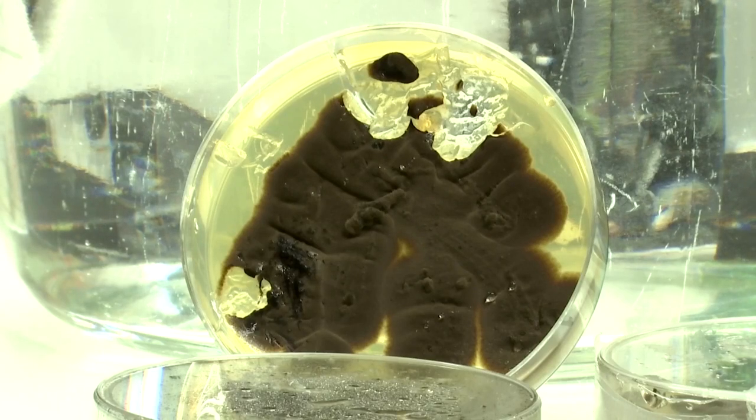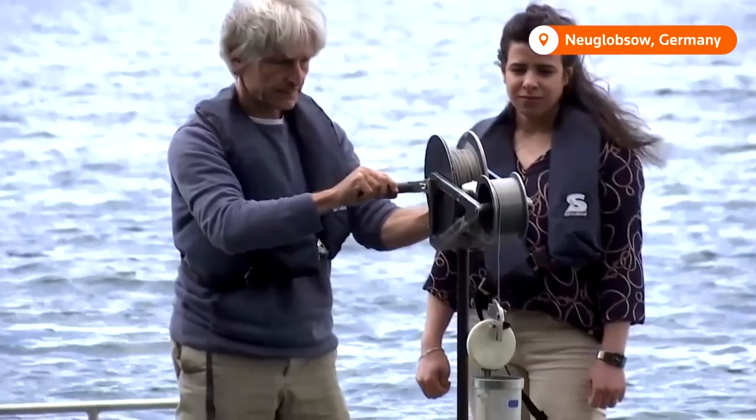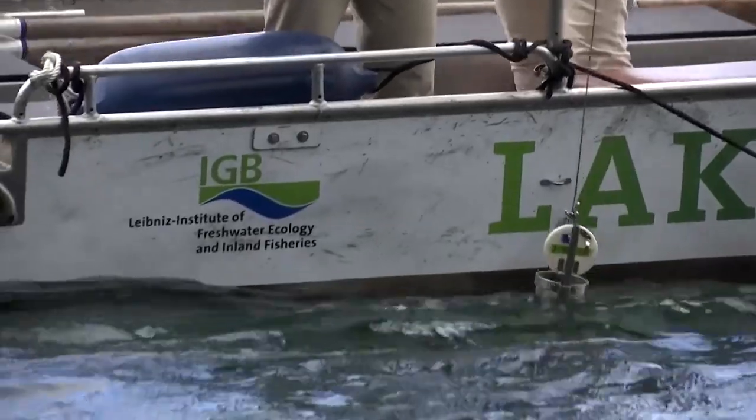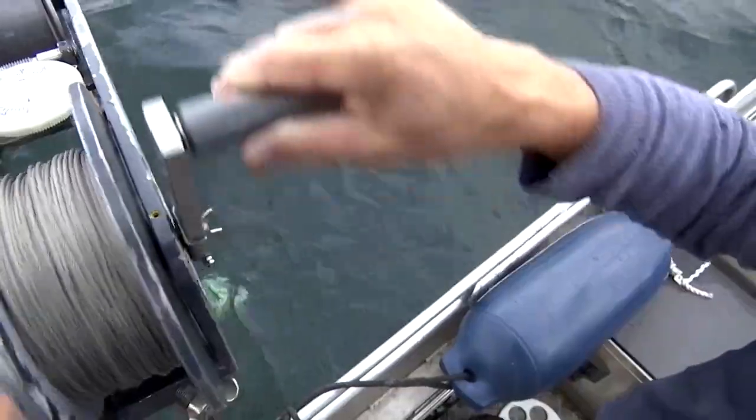These fungi munch on plastic. Scientists analyzed how microfungi behave in this lake in northeastern Germany and saw they thrive on some plastics when there's no other carbon source to feed on.